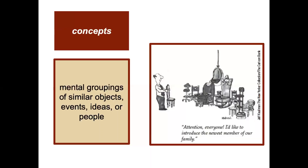A big idea within cognition is concepts. We use that term all the time, but what does it really mean within the field of psychology? Concepts are mental groupings of similar objects, events, ideas, or people. For example, we have a concept of what furniture is, or dogs, or flowers, or chairs. Those chairs aren't all the same, but they all fit under our concept of what a chair is.